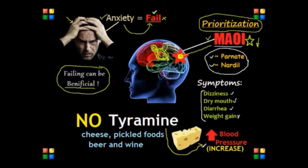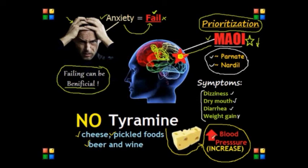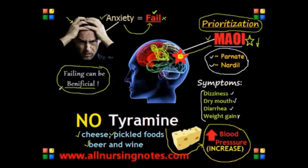The biggest takeaway is that when giving MAOIs to a patient, we need to avoid foods with high levels of tyramine — no cheese, no pickles, no beer or wine. Thank you for watching and best of luck on your NCLEX exam. For more review, visit www.allnursingnotes.com.